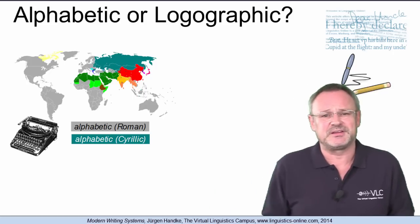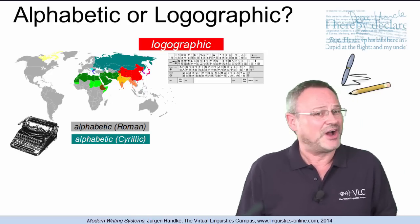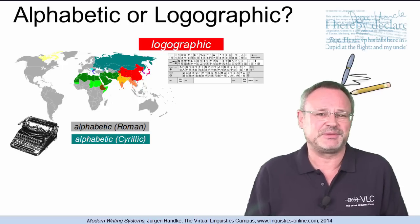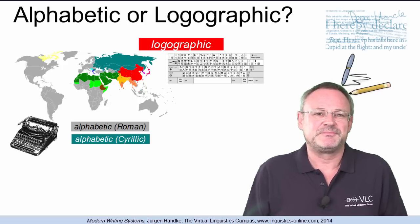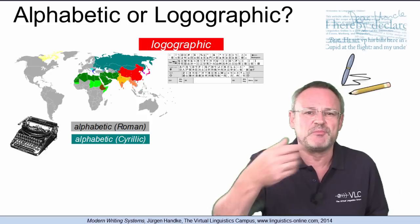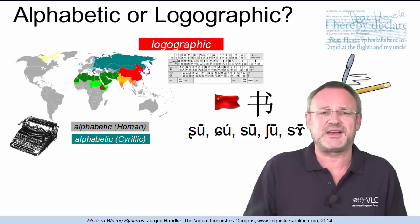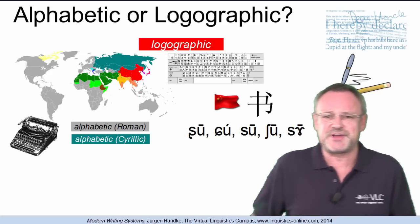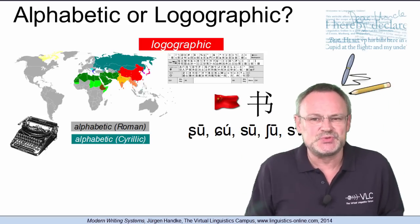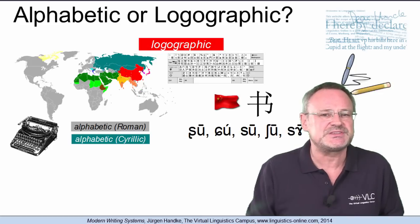So many people think that logographic writing systems, such as the one used in Chinese, are too complicated and should be given up in favour of an alphabetic system. However, the advantage of logograms, such as the one used for book in Chinese, is that everyone can read and understand them, irrespective of dialectal variation, such as the variants here. So all these are variants. The symbol remains the same.